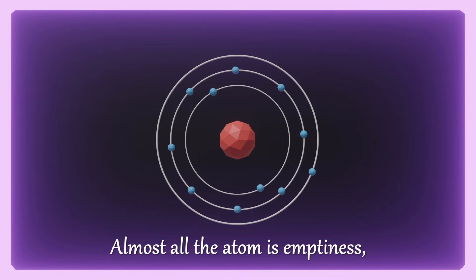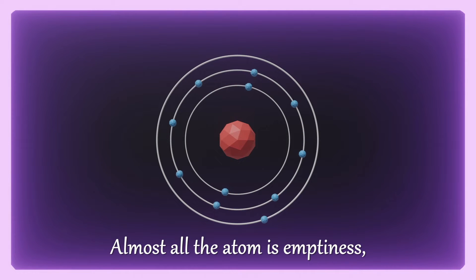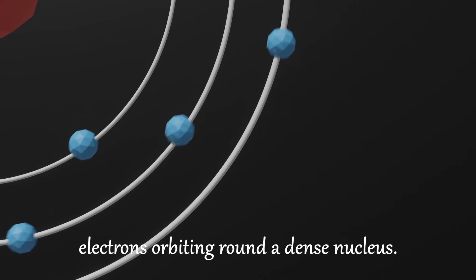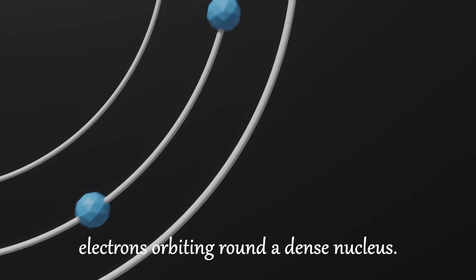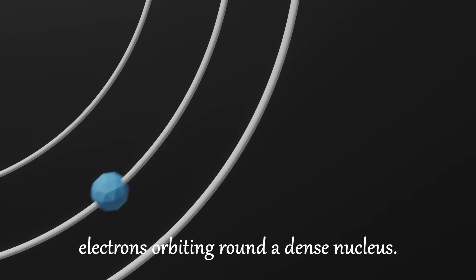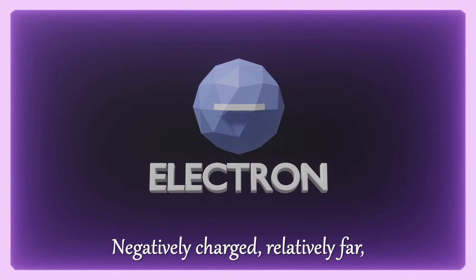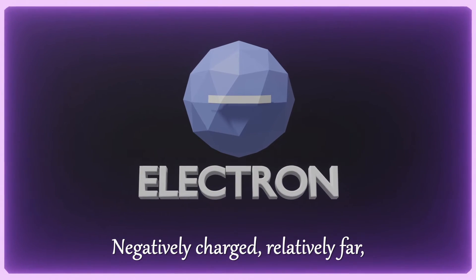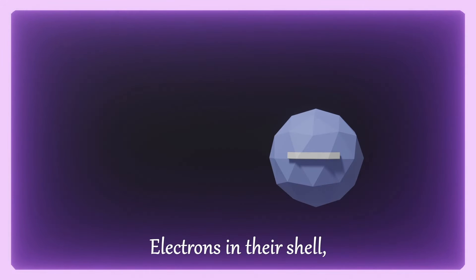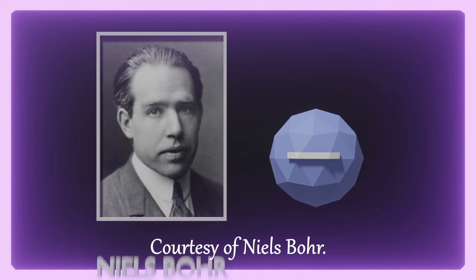Almost all of the atom is emptiness. Electrons orbiting round the dense nucleus, negatively charged, relatively far. Electrons in the shell.